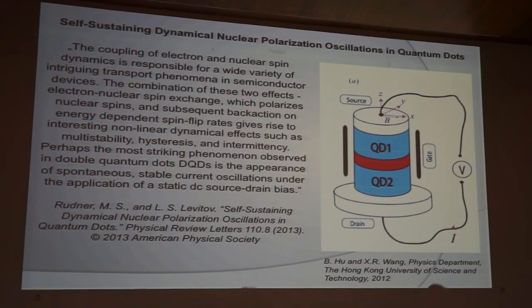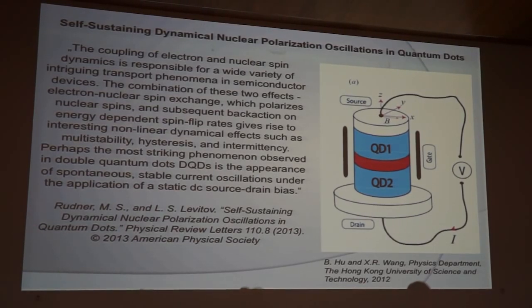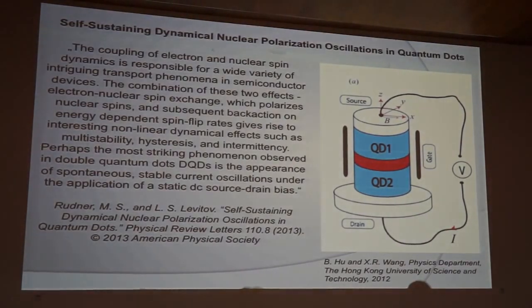Now, there are two oscillatory phenomena playing a role in the silicate. One phenomenon is the self-sustaining dynamical nuclear polarization oscillation in quantum dots. The coupling of electron and nuclear spin dynamics is responsible for a wide variety of intriguing transport phenomena in semiconductor devices. The combination of these two effects, electron-nuclear spin exchange, which polarizes nuclear spins, and subsequent back action on energy-dependent spin flip rates, gives rise to interesting non-linear dynamical effects such as multistability, hysteresis, and intermittency. Perhaps the most striking phenomenon observed in double quantum dots is the appearance of spontaneous, stable current oscillations under the application of a static DC source drain bias.